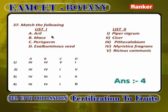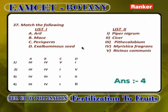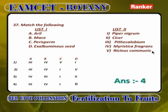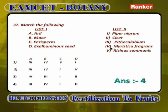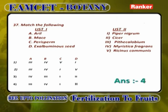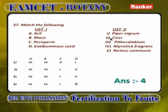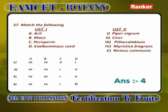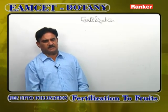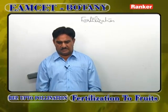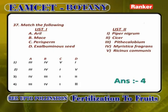Matching: Aril — Pithecellobium dulce, A is 3. Mace — Myristica fragrans, B is 4. Perisperm (remnant of nucellus) — Piper nigrum, C is 1. Exalbuminous seed (non-endospermic seed, food stored in cotyledons) — Cicer arietinum (chickpea), D is 2. Answer: A3, B4, C1, D2.